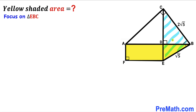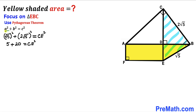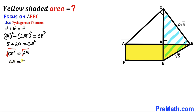Now let's focus on right triangle EBC and apply the Pythagorean theorem to calculate side length CE. Using A squared plus B squared equals C squared, we get: square root of 5 whole squared plus 2 times square root of 5 whole squared equals CE squared. Simplifying: 5 plus 20 equals CE squared, so CE squared equals 25. Taking the square root of both sides, CE equals 5 units.